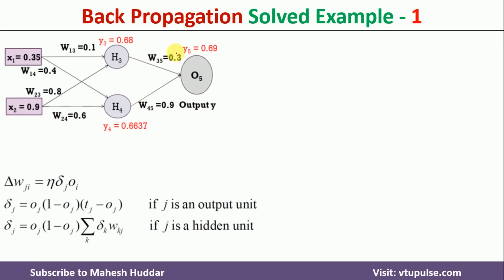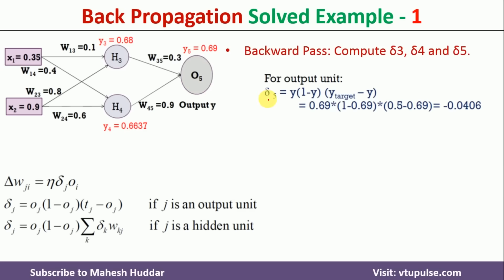First we calculate the delta term at the output unit, delta5: δ5 = y5 × (1 − y5) × (t − y5) = 0.69 × (1 − 0.69) × (0.5 − 0.69) = −0.0406.